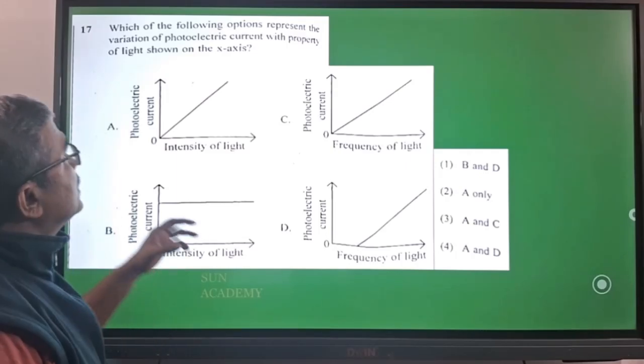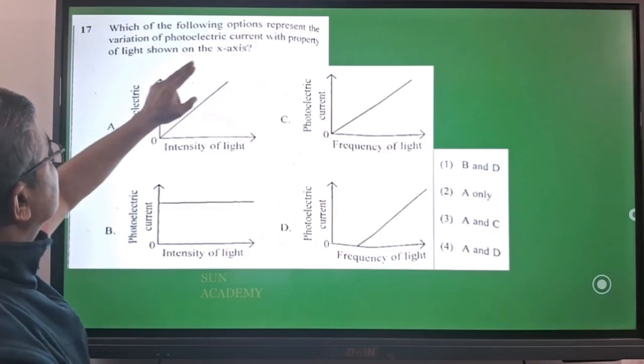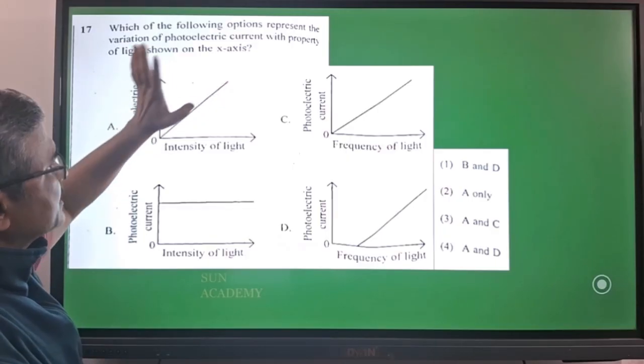Our next question is, which of the following options represents the variation of photoelectric current with the property of light shown on the x-axis?